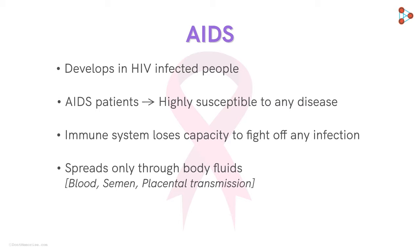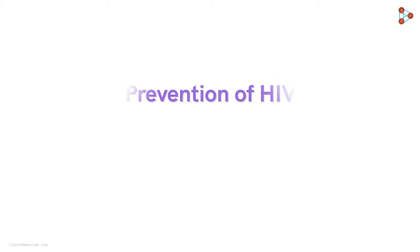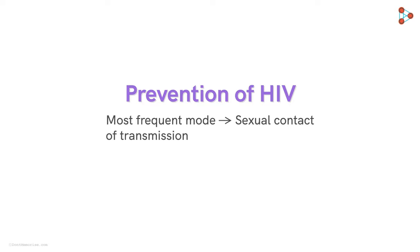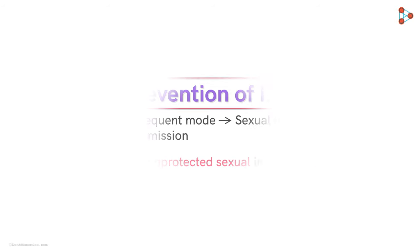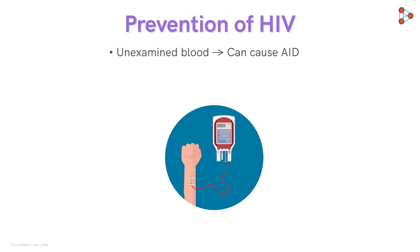Prevention is better than cure — this is very apt in the case of AIDS, as there is no cure once the disease reaches a particular stage. Since ages, the most frequent mode of transmission has been through sexual contact, so avoiding unprotected sexual intercourse is the best way to prevent transmission of HIV. Another frequent method of transmission is blood transfusion, so getting blood transfused without prior examination should strictly be avoided.